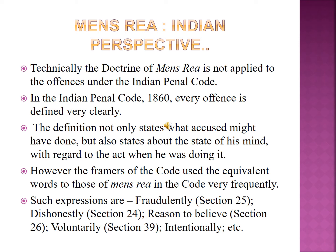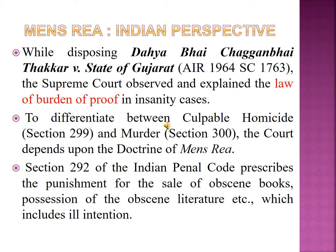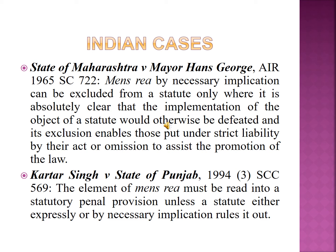In Dharibhai Chaganabhai Thakkar v. State of Gujarat, the Supreme Court observed and explained the law of burden of proof in insanity cases. To differentiate between culpable homicide and murder, the court depends upon the doctrine of mens rea. Section 292 of IPC prescribes punishment for the sale of obscene books and possession of obscene literature, which includes ill intention. Leading Indian cases on mens rea: in State of Maharashtra v. Mayor Hans George, it was held that mens rea can be excluded from a statute by necessary implication only where it is absolutely clear that the implementation of the object of the statute would otherwise be defeated. In Kartar Singh v. State of Punjab, it was held that the element of mens rea must be read into a statutory penal provision unless a statute either expressly or by necessary implication rules it out.